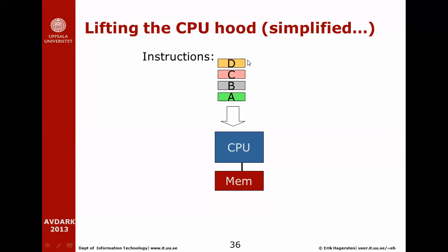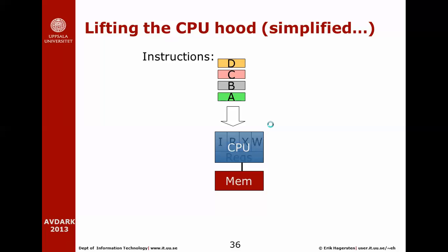A CPU executes some number of instructions — instructions A, B, C, and D. If we lift the hood and see what's implemented inside the CPU, we'll see that it contains some number of pipeline stages. These pipeline stages are like workers on a car factory conveyor belt, where each worker specializes in building one part of the car. Once done, it passes the car to the next worker, and in the same way, each instruction is passed between workers until it reaches the last one and is done.